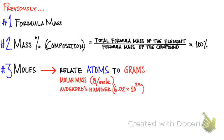When converting from mass to moles and vice versa, you need the molar mass of that substance, which has the units grams per mole. Similarly, when converting from moles to number of atoms and vice versa, you need Avogadro's number, which is equivalent to 6.02 times 10 to the 23rd power.